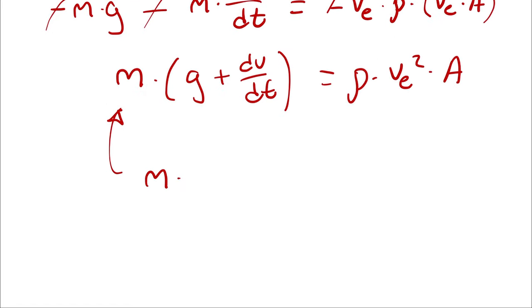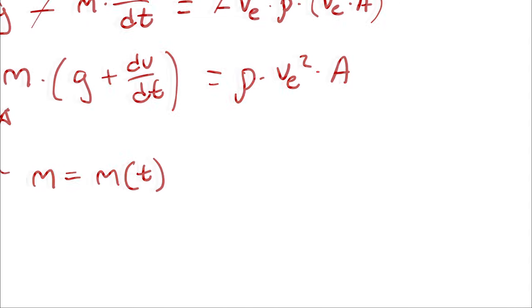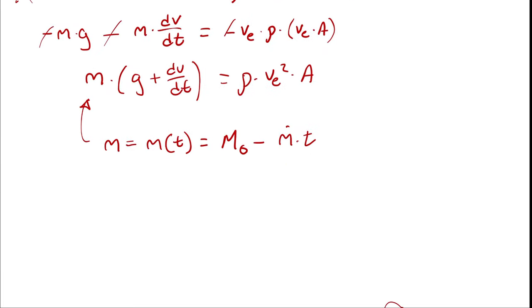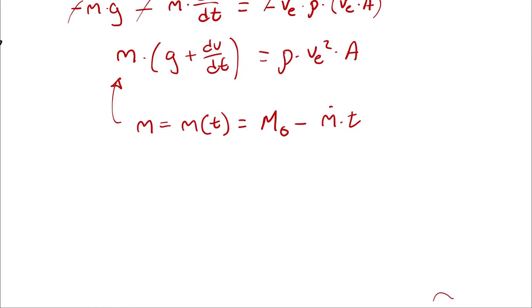So, I could describe mass as a function of time. And I could say that mass would be whatever the initial mass is minus the rate at which mass is exiting times whatever time has passed so far. So, I have quantity m0 minus m dot times t times gravity plus dv dt.